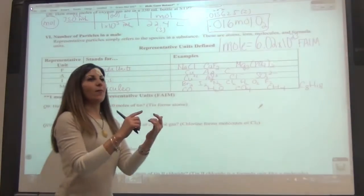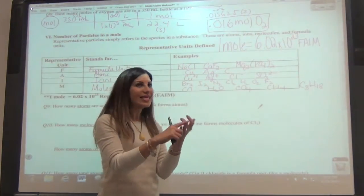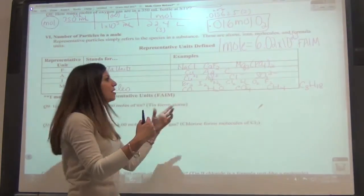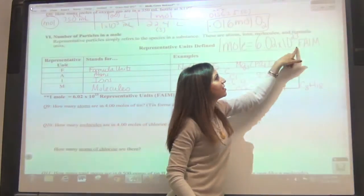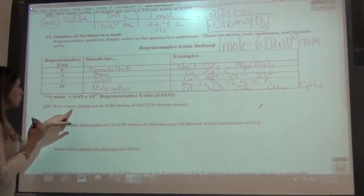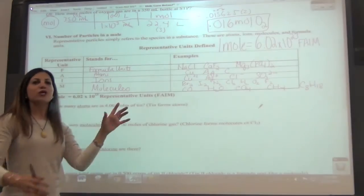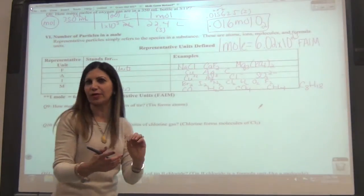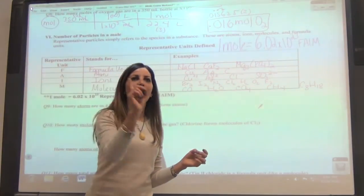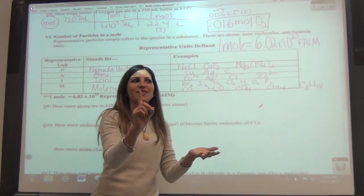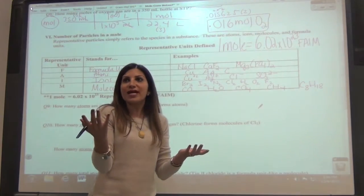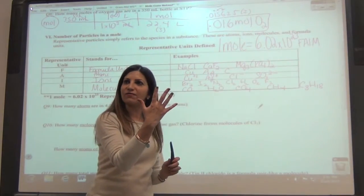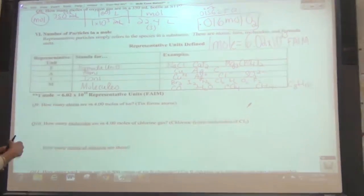Now we're not talking about molar mass or liters per mole right now. We have a ratio for liters per mole, and a ratio for changing grams to moles or moles to grams. But what if you're trying to change from one of these particle types to moles or the other way? The question says: how many atoms are in 4.00 moles of tin? We're going to do these bridges to ensure you do it properly even when you have five steps.